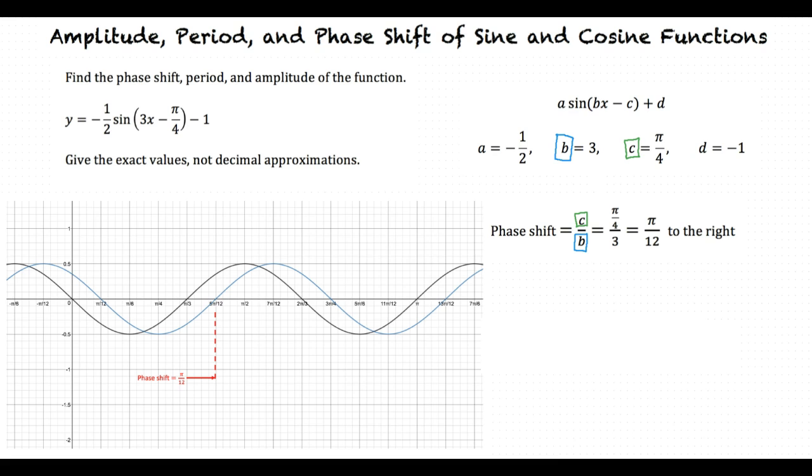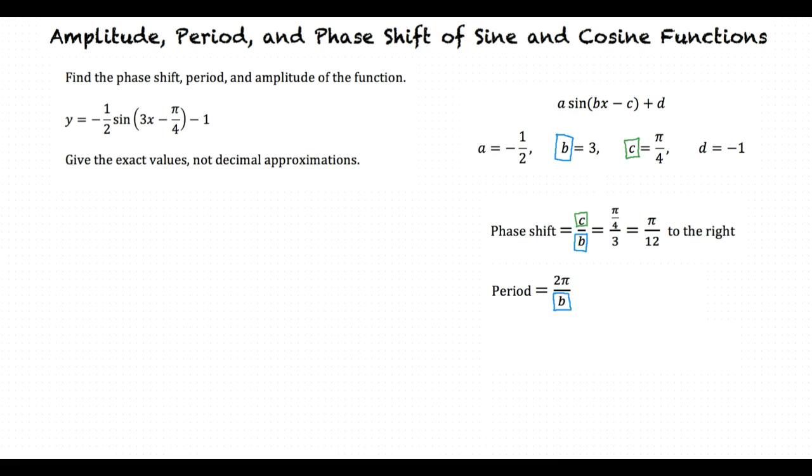The period is 2π divided by b, which is 2π thirds. The amplitude is the absolute value of a, which is the absolute value of negative one-half. This equals one-half.